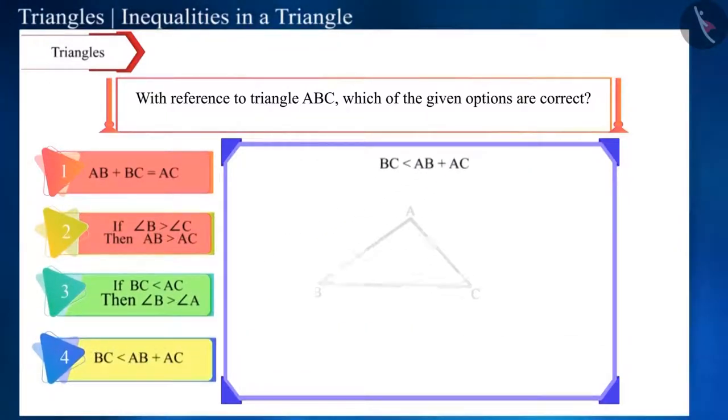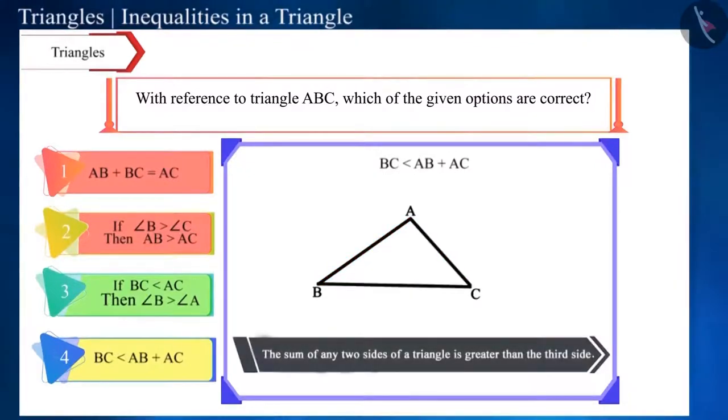Now let's take the last option. Side BC is smaller than the sum of side AB and side AC. These are the three sides of the triangle ABC and the size of any one side of a triangle is smaller than the sum of the other two sides. So, this option is also correct.